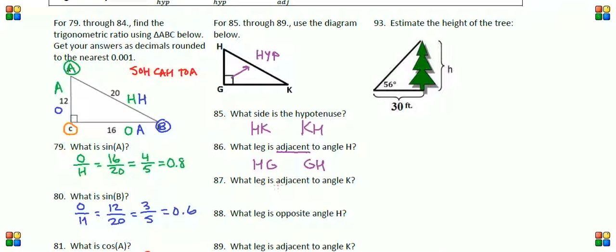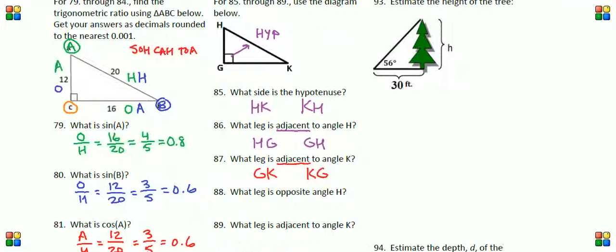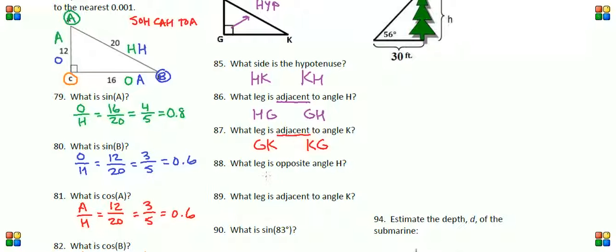Which leg is adjacent to angle K? Let's be careful now, we're using a different reference angle. Taking a look at angle K, again the hypotenuse will never be opposite or adjacent. So looking at angle K, the adjacent leg is GK—it's the leg that touches angle K. You could also write this as KG.